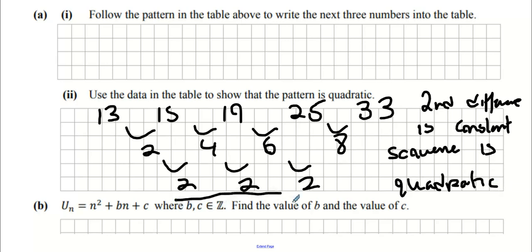Second difference is constant, sequence is quadratic. It doesn't have to be 2, it can be any number that doesn't change. It could be 3 or 4. Now, they want us to find the values of B and C. This would usually be a TN question, but in this one they're using UN. Here's how you do this type of question.